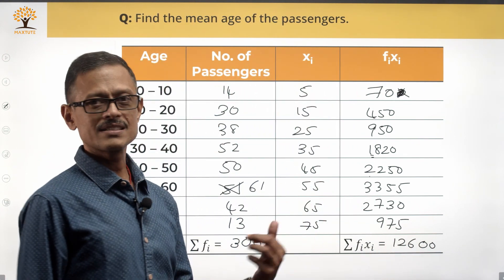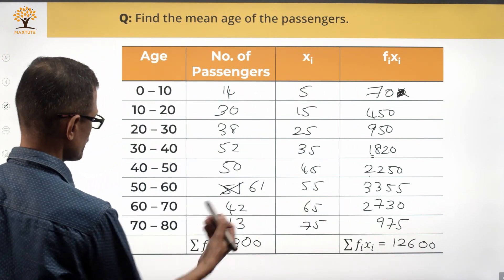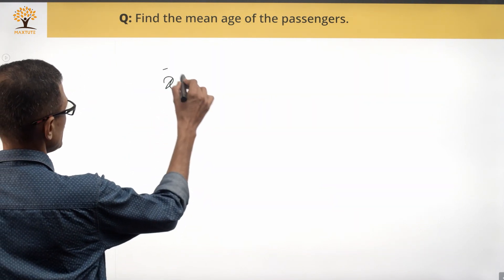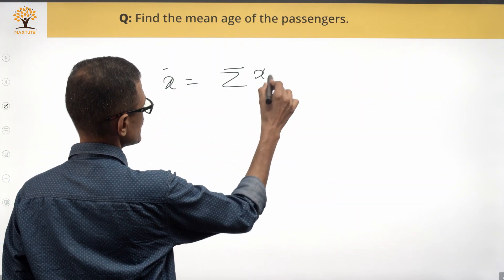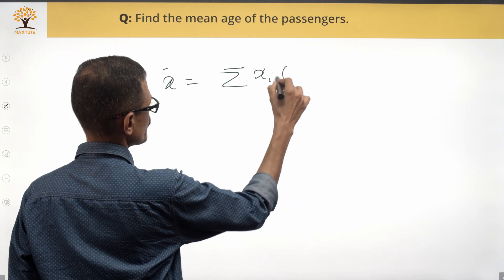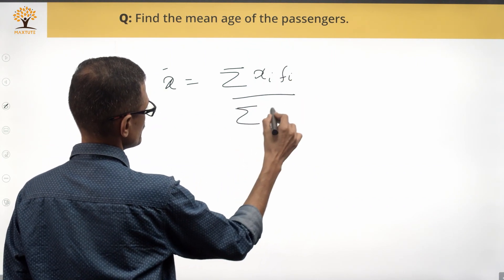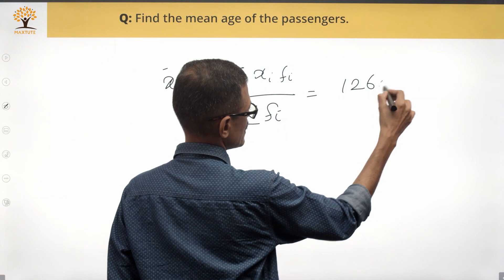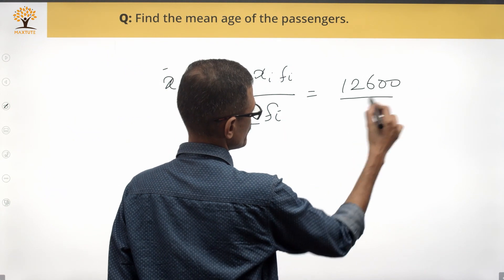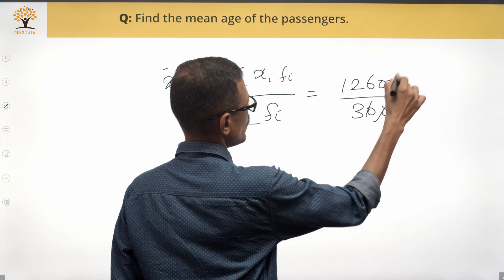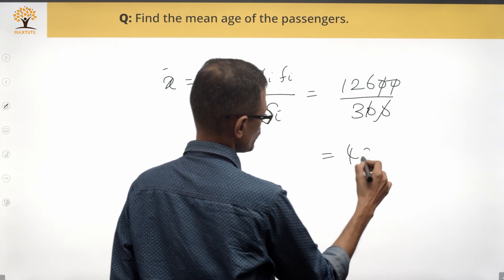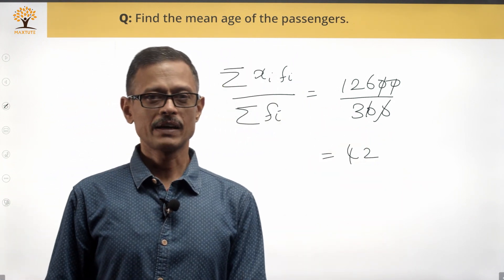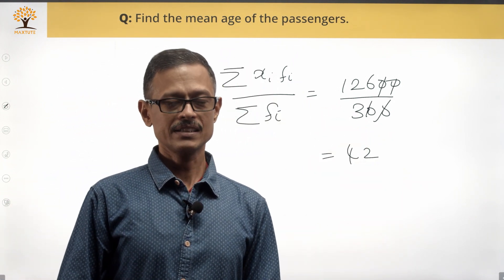We know Σfi = 300. So the mean x̄ = Σ(fi × xi) / Σfi = 12,600 / 300 = 42. The average age of the passengers traveling by that aircraft is 42 years.